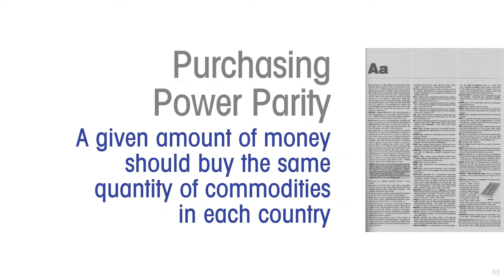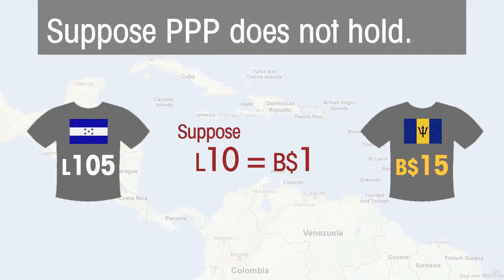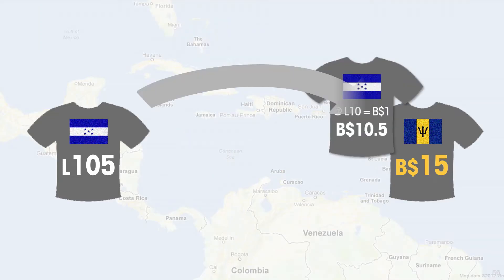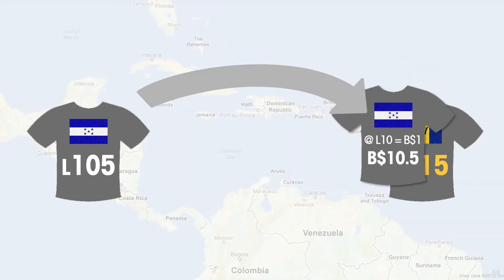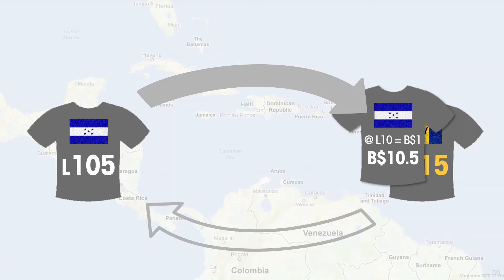It makes sense that a given amount of money should buy the same quantity of commodities in each country — that's the idea behind purchasing power parity. Now suppose the actual exchange rate is not consistent with PPP. Suppose the actual exchange rate were 10 lempiras to one Barbadian dollar. Well then, once again, you see a money-making opportunity. You can buy t-shirts in Honduras, bring them to Barbados, and those t-shirts that you bought for the equivalent of $10.50 Barbadian dollars you can sell for 15 Barbadian dollars — making a handsome profit. You take your initial investment and profit back to Honduras and repeat the cycle.